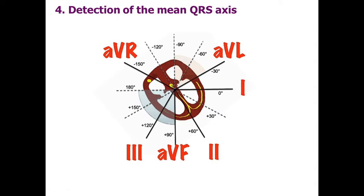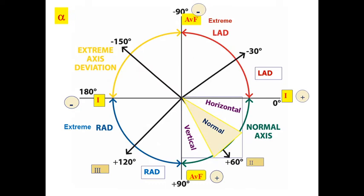After that, we should detect the heart axis. A normal heart axis is located between 30 and 70 degrees — this degree is called the alpha angle. If your patient's alpha angle is from 30 to 70, it is a normal axis. From 0 to +30 degrees, it is a horizontal position of the heart. From 70 to +90 degrees, it is a vertical position of the heart.